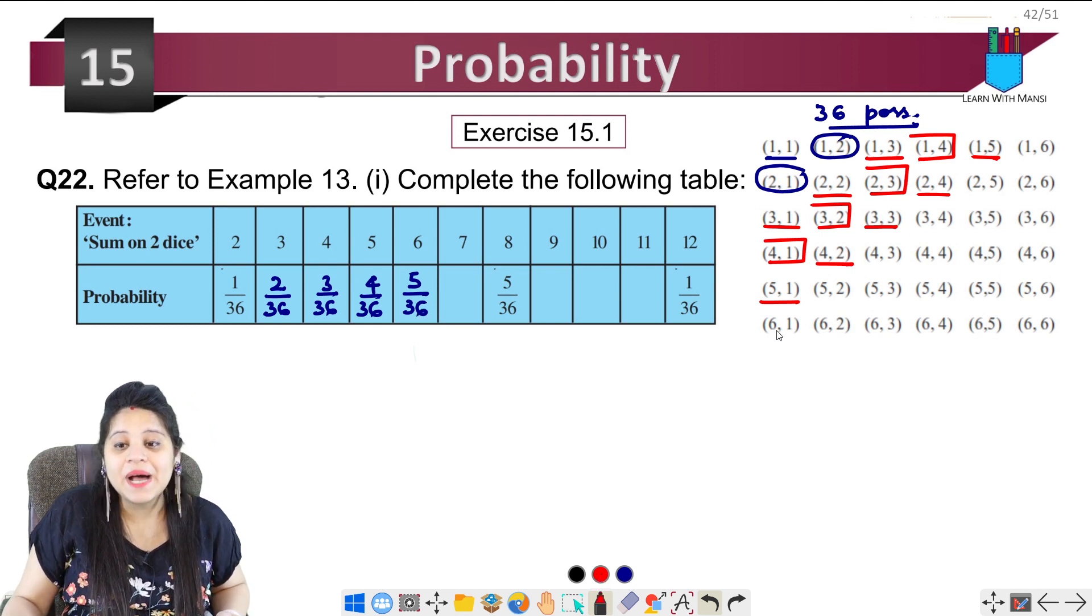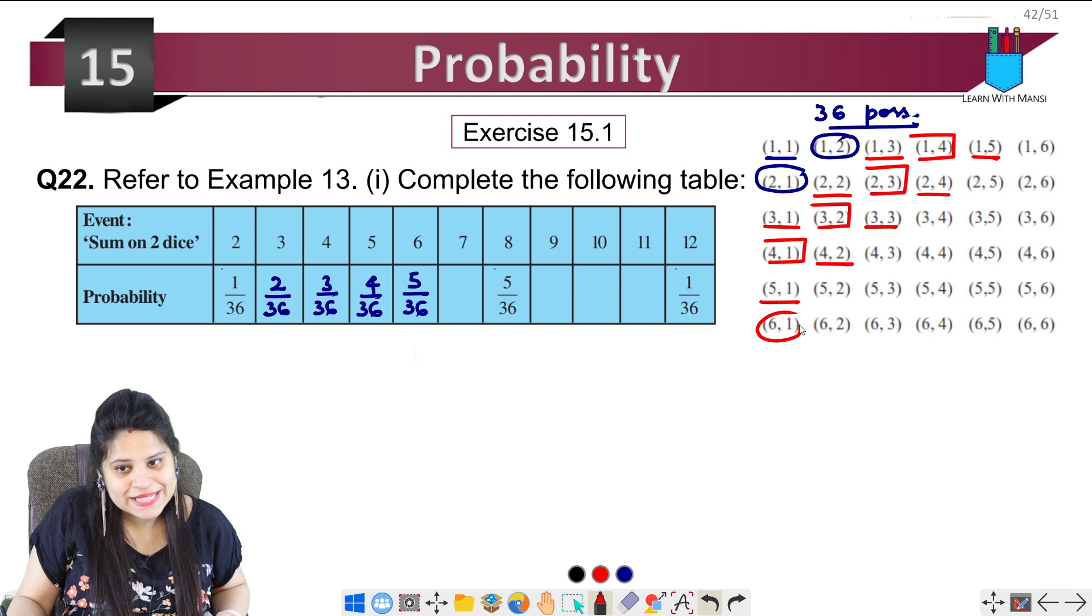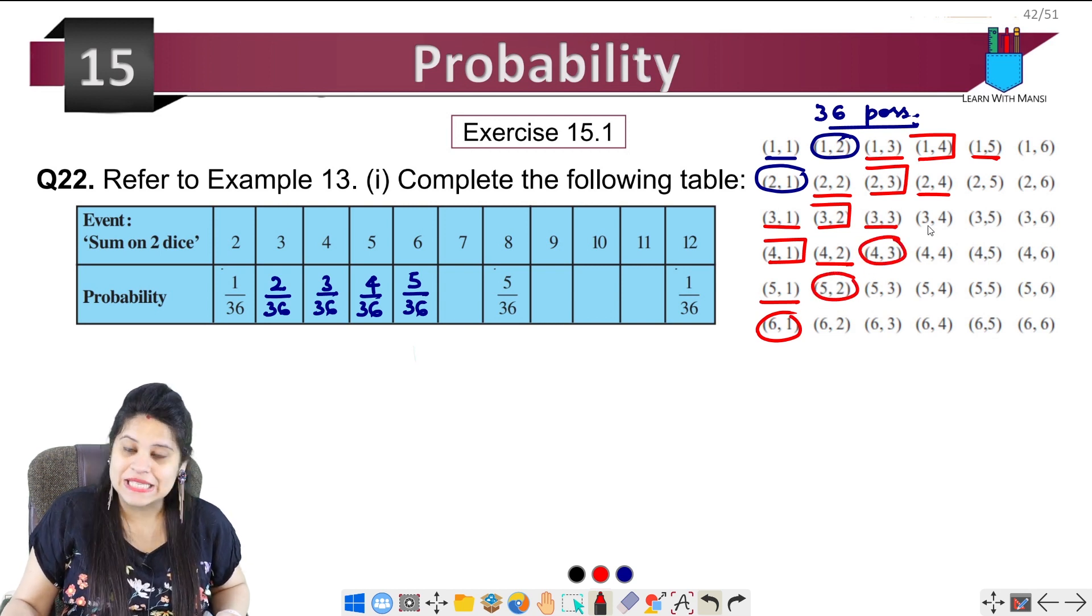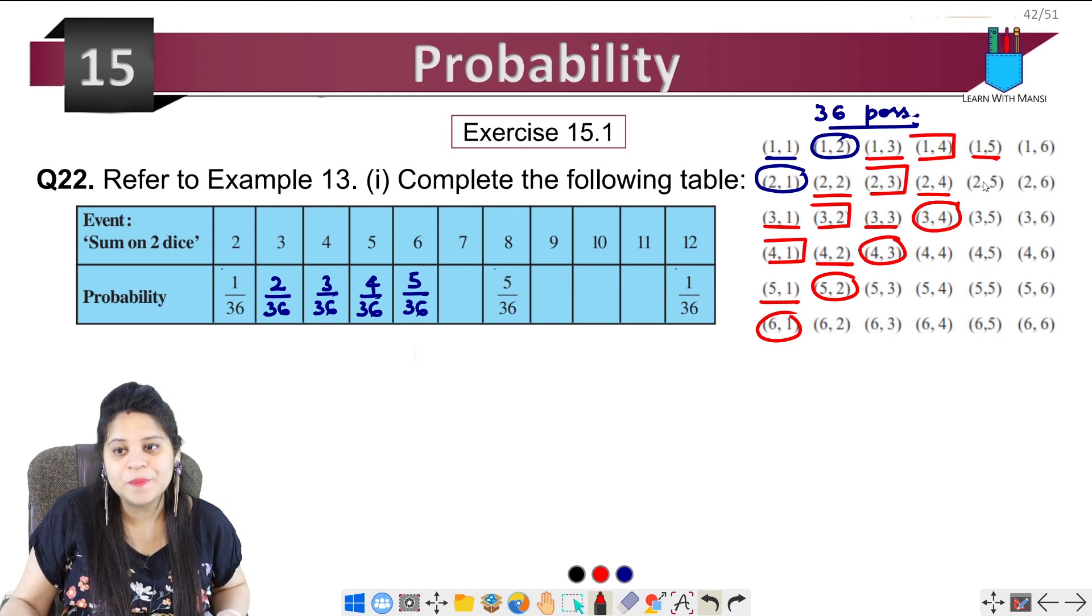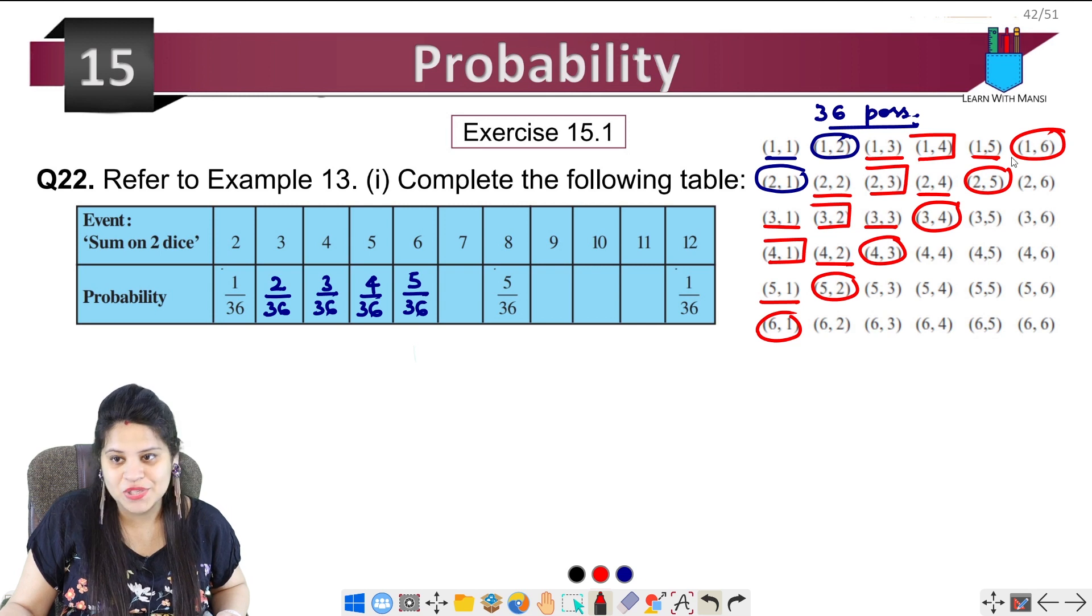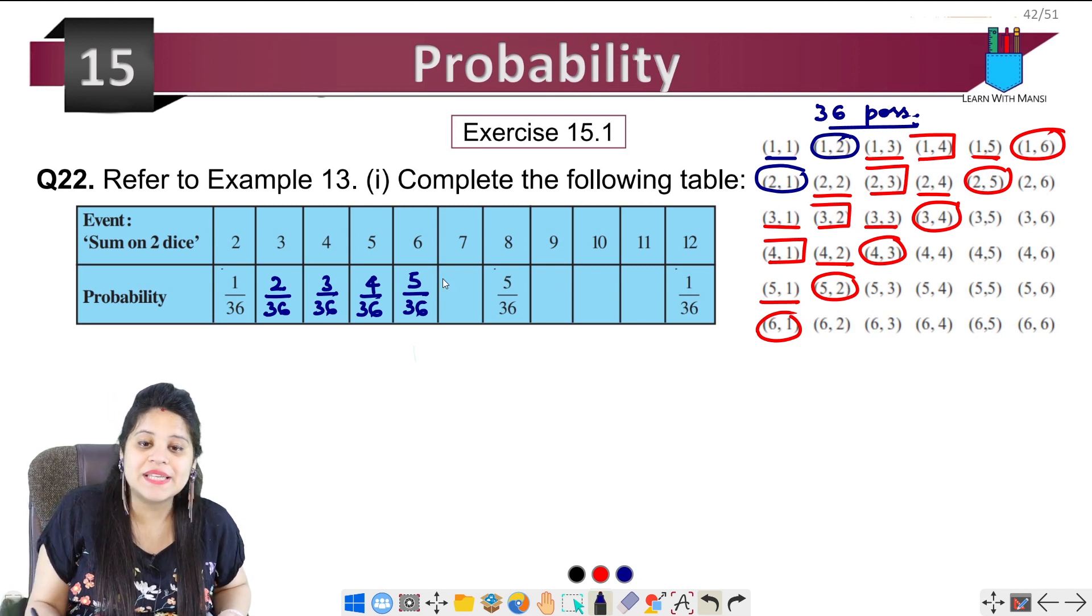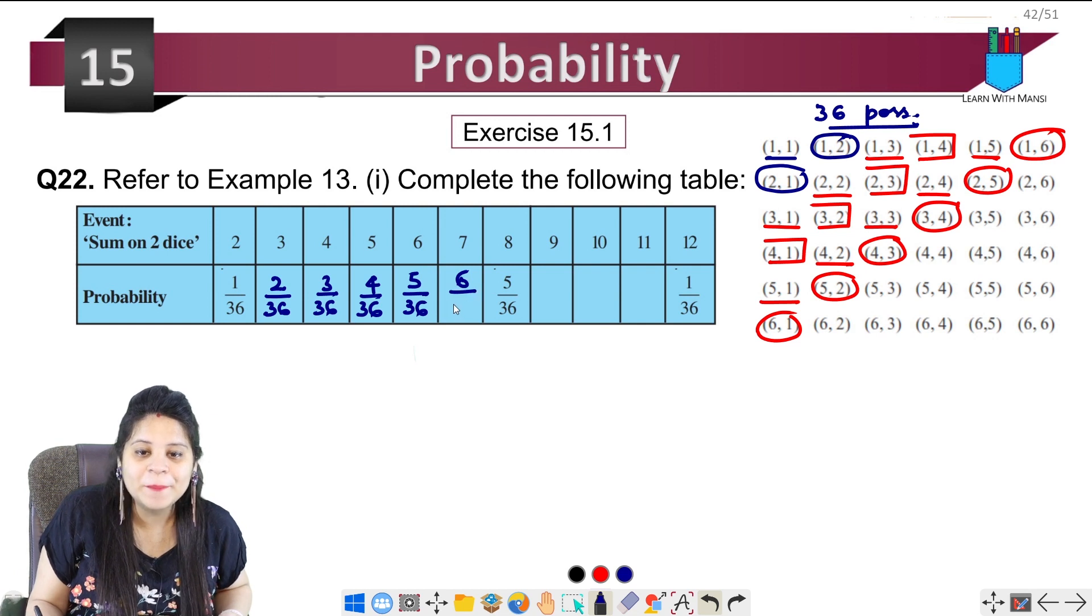Let's talk about 7. Now, 6 plus 1 is 7. 5 plus 2 is 7 again. 4 plus 3 is 7 again. 3 plus 4 is 7. 2 plus 5 is 7. 1 plus 6 is 7. So 1, 2, 3, 4, 5, 6 - there are 6 possibilities. That means 6 upon 36.